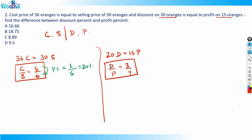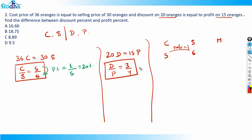To find the difference between discount percent and profit percent, I need cost price, selling price, and mark price. Cost price is 5, selling price is 6, so profit is 1. But I need mark price too, and discount is 3 while profit is 4 from the ratio d/p = 3/4. So I need to make profit equal to 4 — multiply the c:s ratio by 4, giving c = 20 and s = 24.